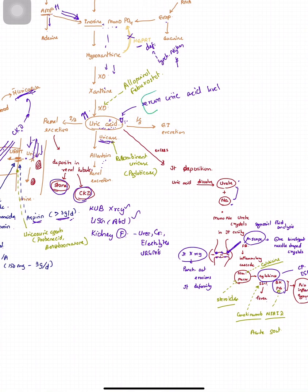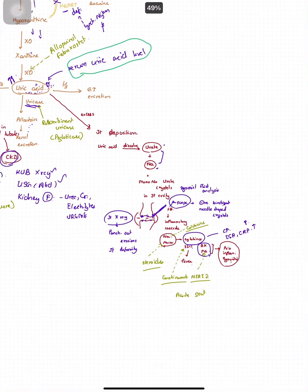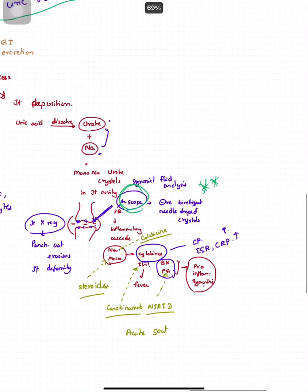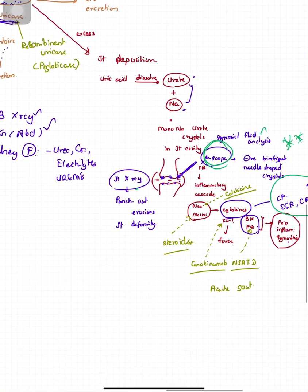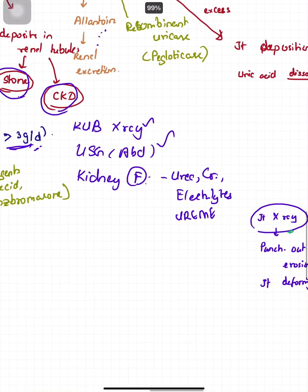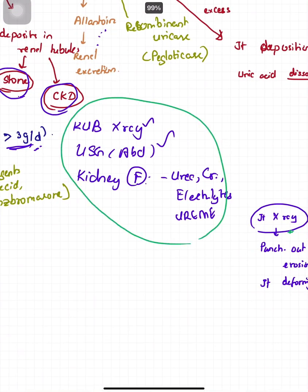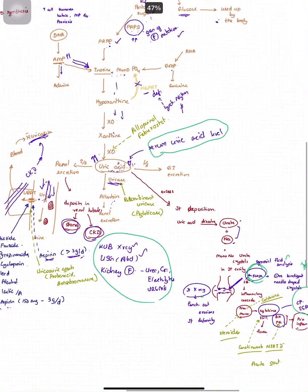For investigations, you can do serum uric acid level, which in most cases will be high. The most definitive investigation is synovial fluid analysis by microscopy, which will show negatively birefringent needle-shaped crystals. Inflammatory markers will be increased. You can also do joint X-ray to detect complications, as well as KUB X-ray, ultrasound, and kidney function tests.